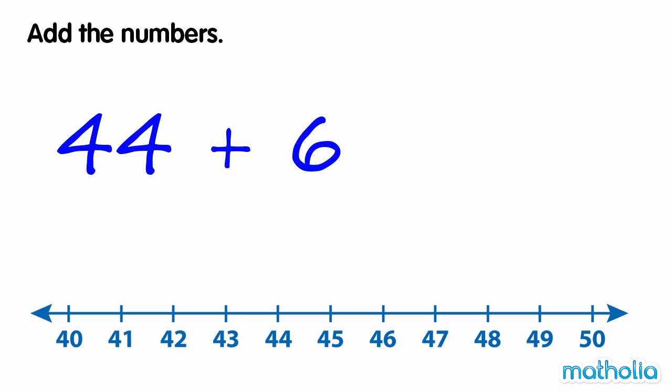Add the numbers. We need to find 44 plus 6. Let's start at 44 and count on 6 ones. 44, 45, 46, 47, 48, 49, 50. 44 plus 6 equals 50.